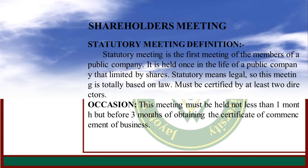Statutory meeting definition: It is the first meeting of the members of a public company. It is held once in the life of a public company that is limited by share. Statutory means legal, so this meeting is totally based on law and must be certified by at least two directors.